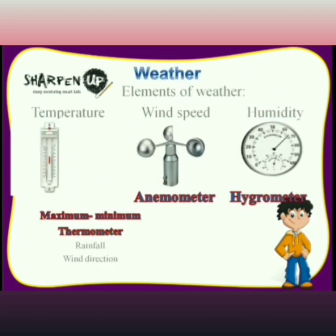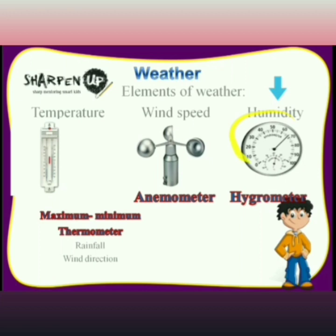Let's discuss the elements of weather. First is temperature — the degree of hotness or coldness of a body or place. The maximum temperature of a day generally occurs at noon, while the minimum temperature occurs in the early morning. A maximum and minimum thermometer is used to record these temperatures.